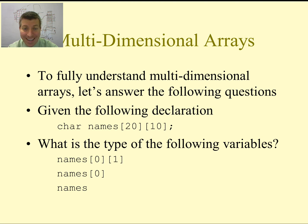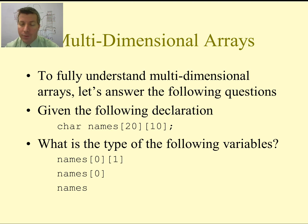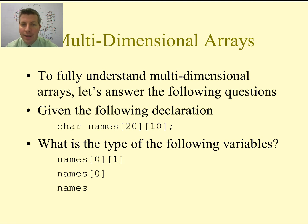When we are reading a character in, we can read a character into names sub-zero sub-one. We cannot read a character into names sub-zero, and we cannot read a character into names itself — those are both arrays: one is a one-dimensional array and the other is a two-dimensional array. To read a character, we have to read it into a character slot, which would be names sub-zero sub-one. In fact, we have 200 characters represented by this names array — from names sub-zero sub-zero all the way up to names sub-19 sub-nine.